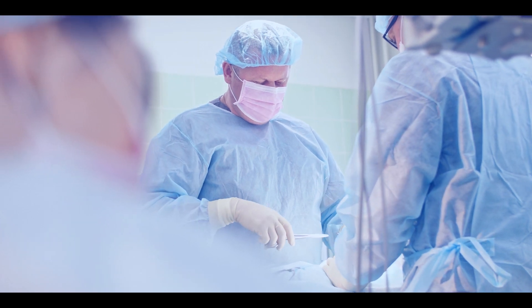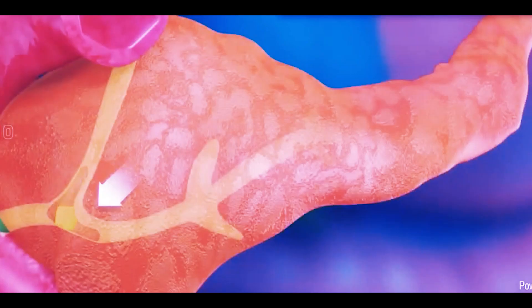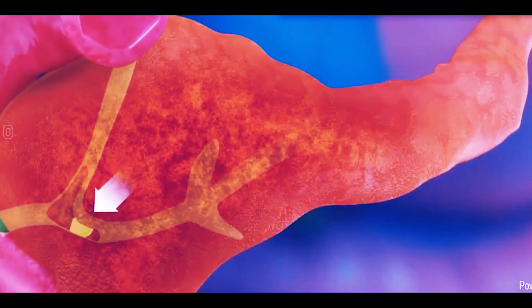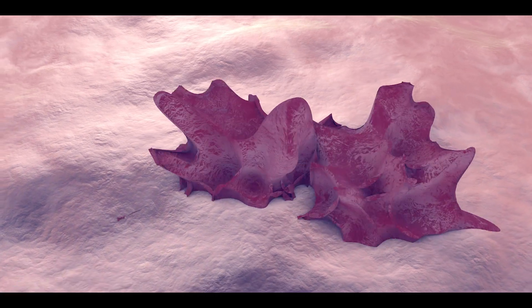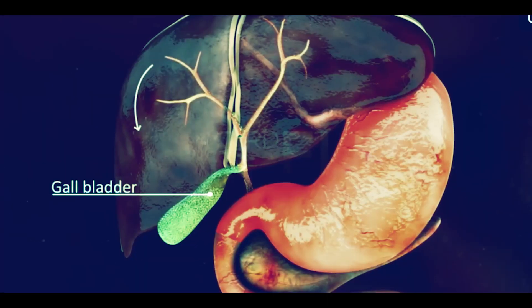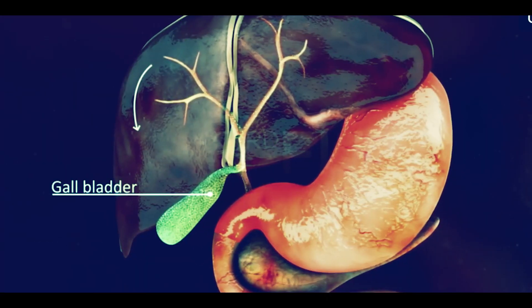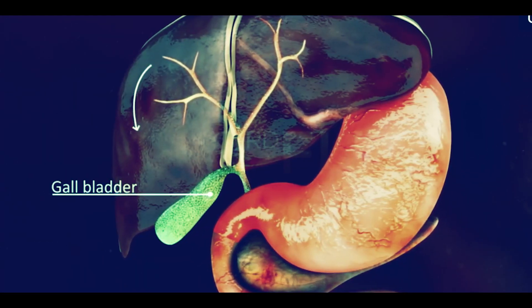Cholecystectomy is performed to remove a dysfunctional gallbladder in cholecystitis patients. In cholecystitis, the bile duct is blocked due to the presence of gallstones or tumor growth, resulting in swelling and inflammation of the gallbladder. A video link with details about cholecystitis is given in the description.